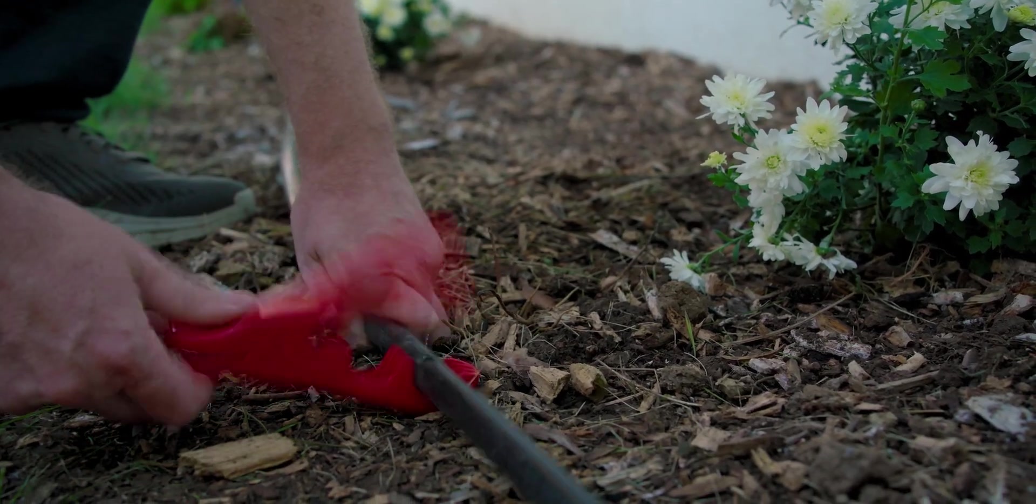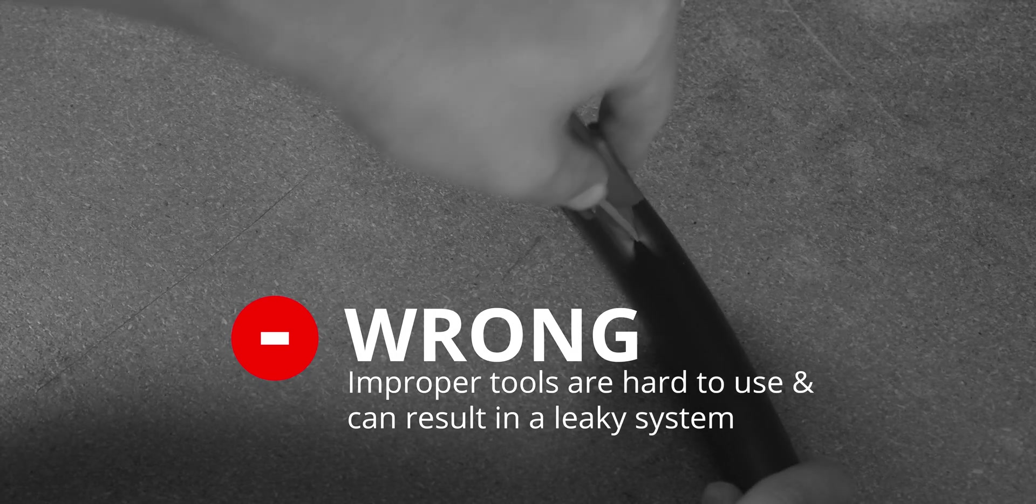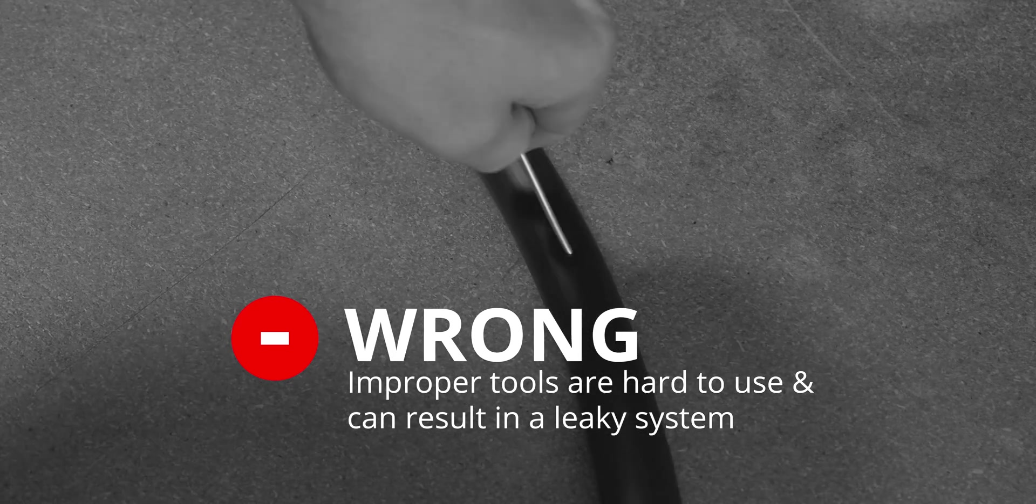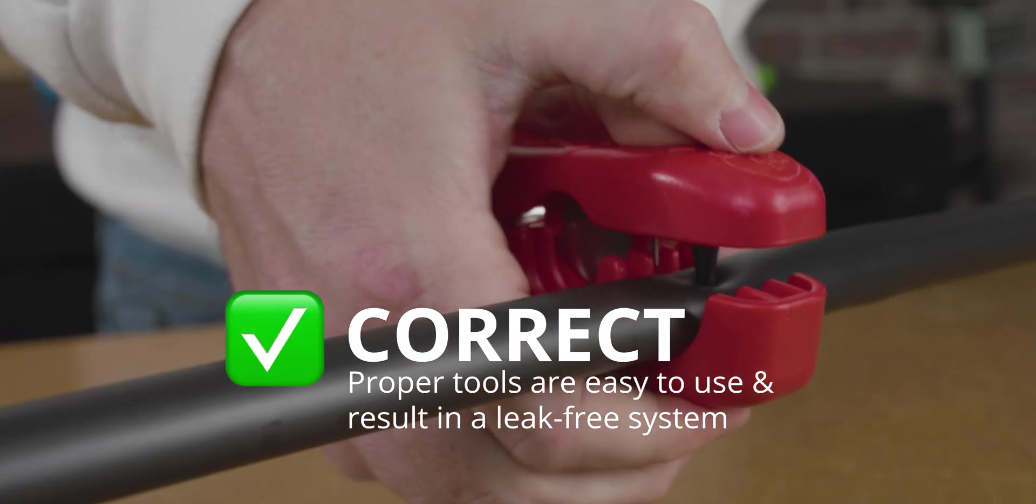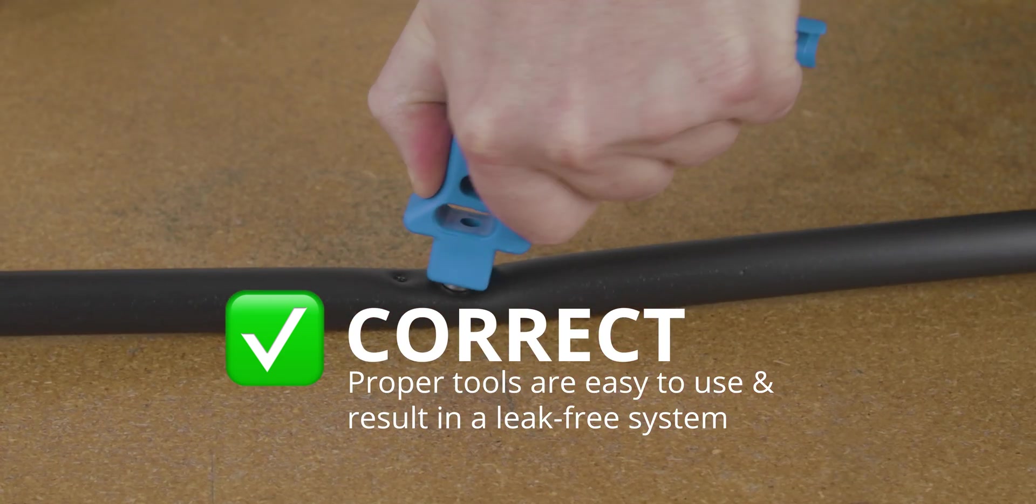You may wonder to yourself, why don't I just use a drill or punch some holes in the tubing with something I already have at home? Because drip irrigation pressurizes your tubing, you want precise holes to prevent leaking, which can not only waste water, but can also compromise the effectiveness of your system. It's also just a lot easier to use a punch purposely built for this task.